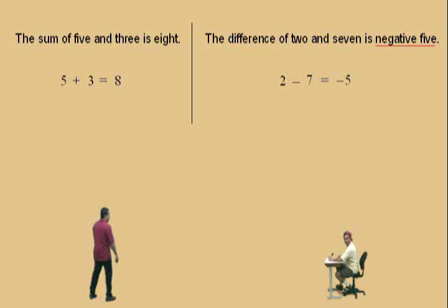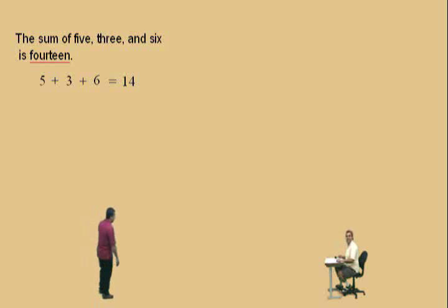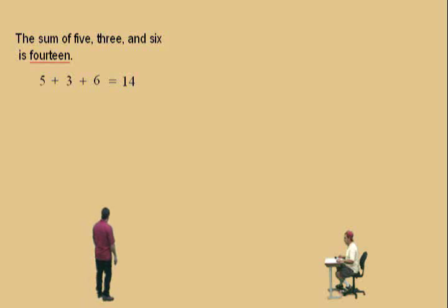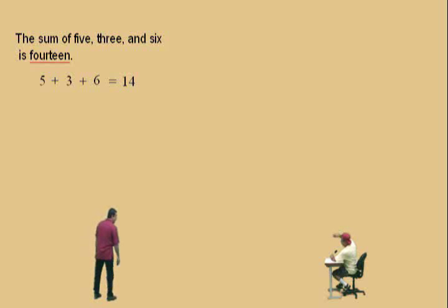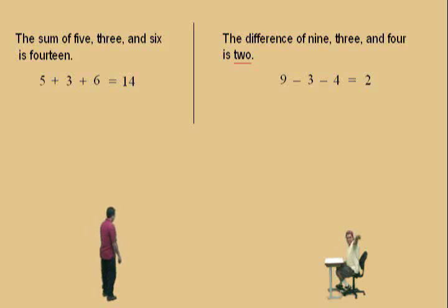Okay, here we go Charlie. We've got a couple more to do. The sum of 5 and 3 and 6 is 14. Very nice — here we have 3 numbers that are being summed. The sum of 5, 3, and 6 is 14, and that's true. Okay Charlie, one more to go. The difference of 9, 3, and 4 is 2. Very nice there, Charlie.